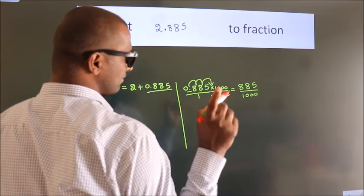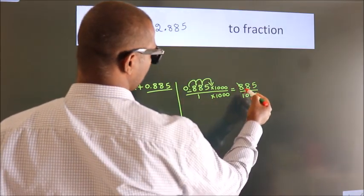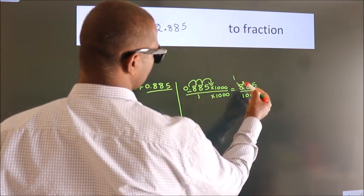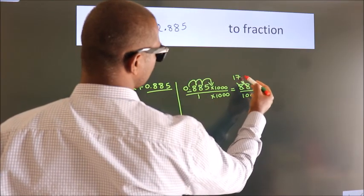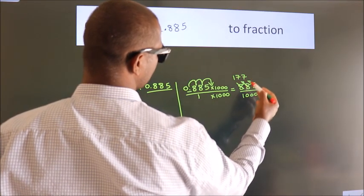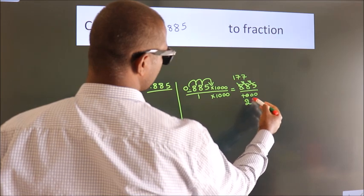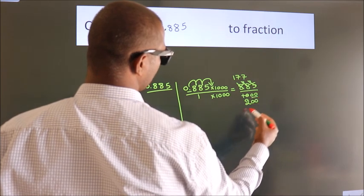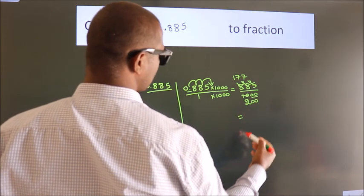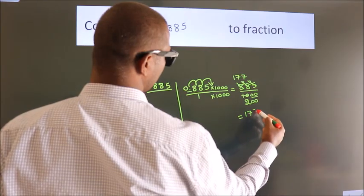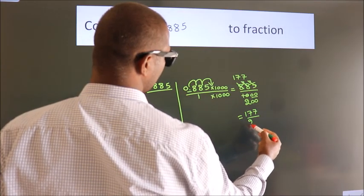Now I cancel with 5. 5 1s, 5 7s, 5 7s, 5 2s. These zeros as it is down. So the fraction we got is 177 by 200.